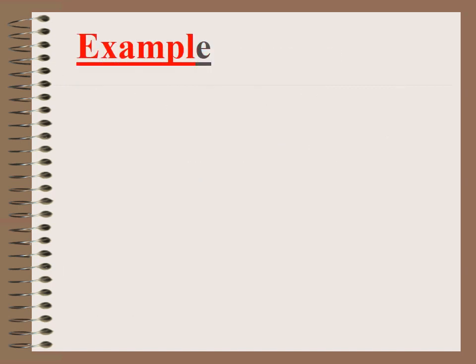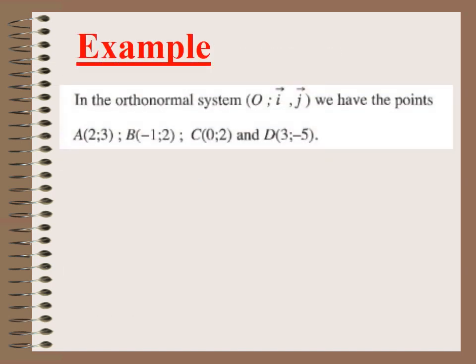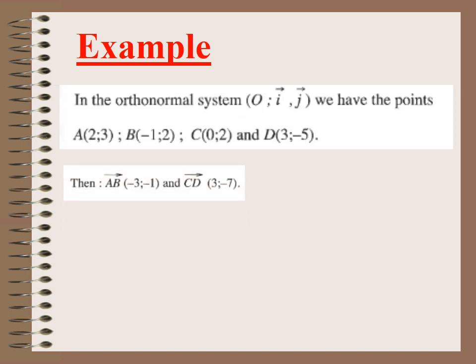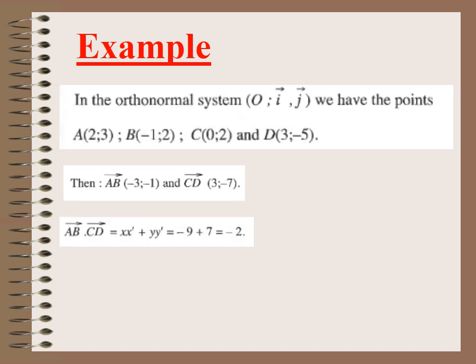Now let's take an example. We have the following points A, B, C, and D in the orthonormal system (i, j). We calculate vector AB as (x_B − x_A, y_B − y_A), and vector CD as (x_D − x_C, y_D − y_C). Then AB·CD is found by multiplying the x-components and y-components together. The x-components give −9 and the y-components give +7, so the final answer is −2.